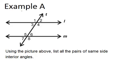So, in this particular picture, angle 3 would be a same side interior angle with angle 5, because they're both on the left side of the transversal T, and they're both on the inside of the lines L and M. So, our first answer is angle 3 and angle 5.